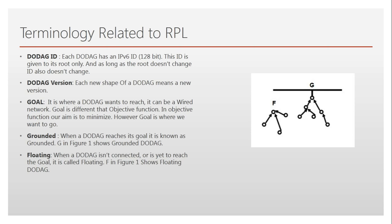A goal should not be confused with the objective function — they are different. The goal is where we want to reach; for example, if a DODAG wants to connect to a wired network, that wired network is the goal. The objective function is what we want to minimize. If a DODAG is connected to its goal, it is called 'grounded.' If it has not reached its goal, it is called 'floating.'